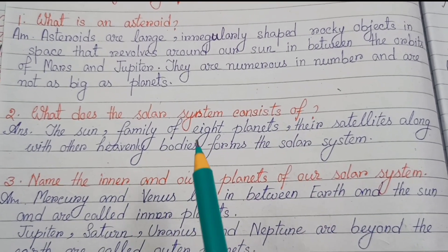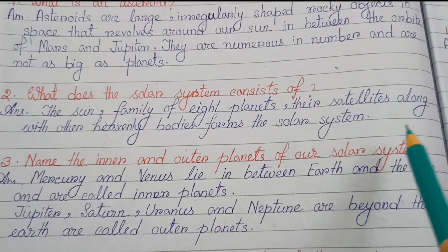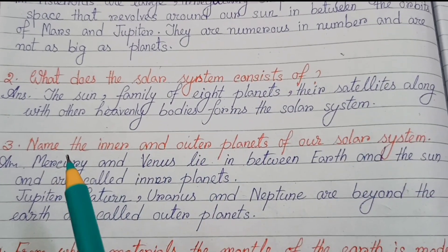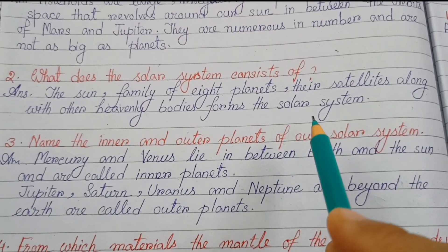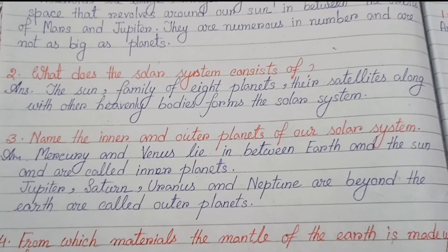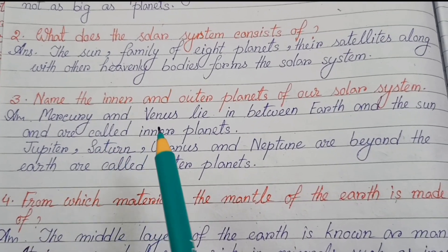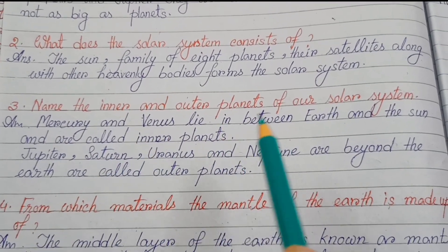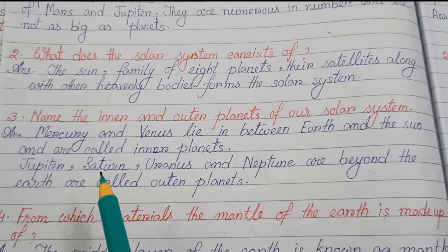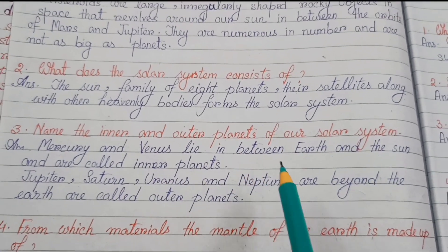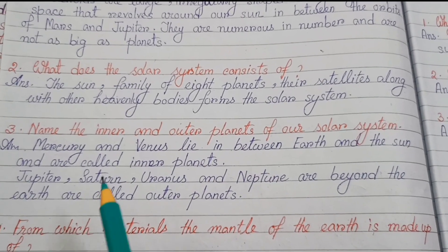Number two: What does the solar system consist of? The sun, a family of eight planets, their satellites, along with other heavenly bodies, forms the solar system. Number three: Name the inner and outer planets of our solar system. Mercury and Venus lie in between Earth and the sun and are called inner planets.